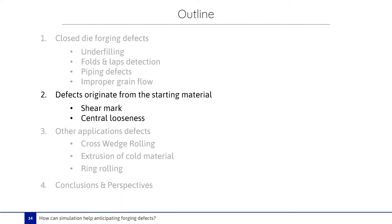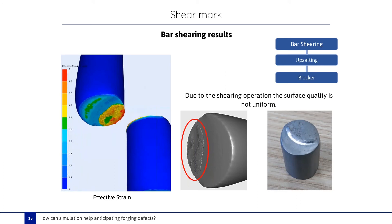Now we will go to other defects — defects that originate from the starting material. These defects appear due to shearing or casting operations. Let's start with the shear mark. The part is made in three operations: a bar shearing operation followed by two forging stages. Here we see the evolution of the effective strain during the shearing operation. The effective strain increases on the shear surface, and due to the shearing operation, the shear surface is not uniform. Comparing to reality, we obtained a shear surface that is not uniform, and our numerical result is in good agreement with the experimental result.